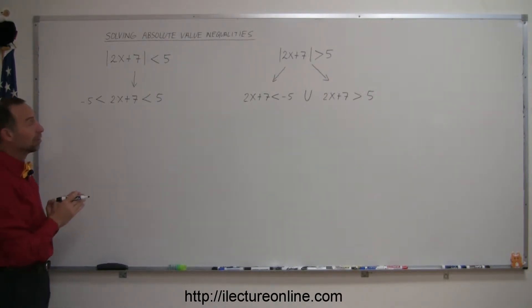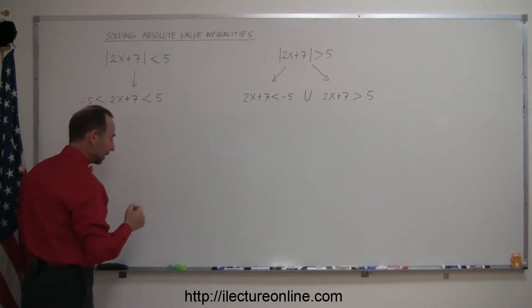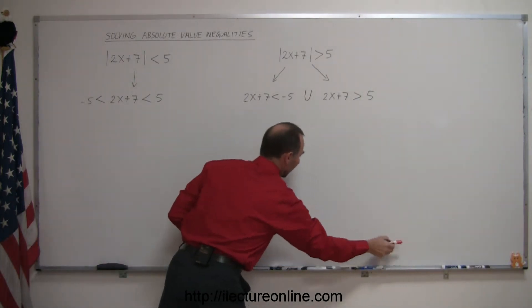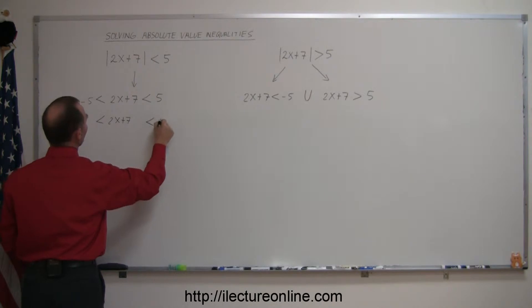All right, so that's how you deal with these. Now, let me show you how to complete the problem. Well, the first thing you want to do here is you want to isolate x. That means you want to get rid of everything else. You want to get rid of the 7. That means you want to subtract 7 from the left, from the middle, and from the right side of the problem. So, you want to rewrite this as minus 5, less than 2x plus 7, less than 5.